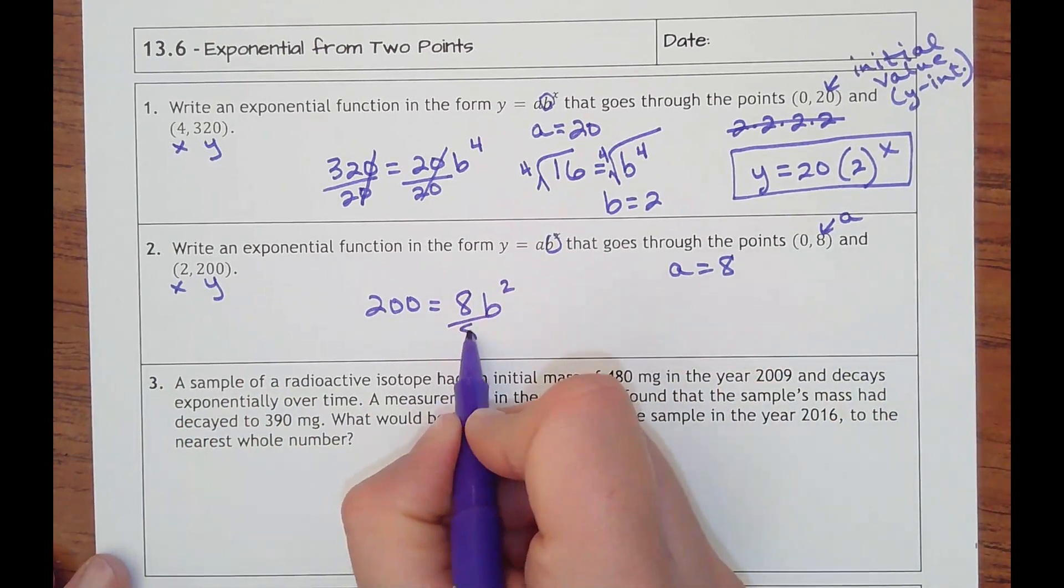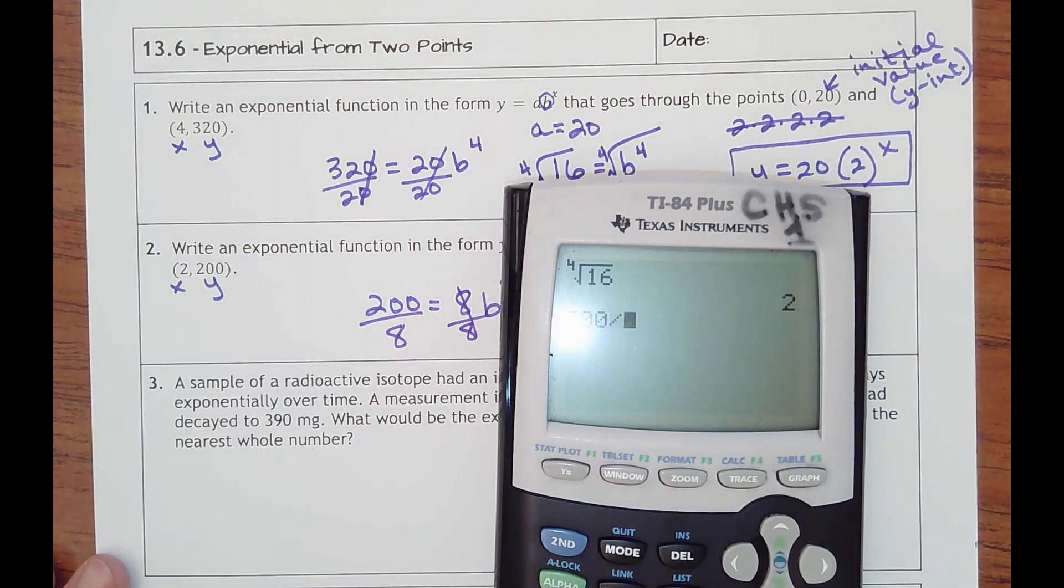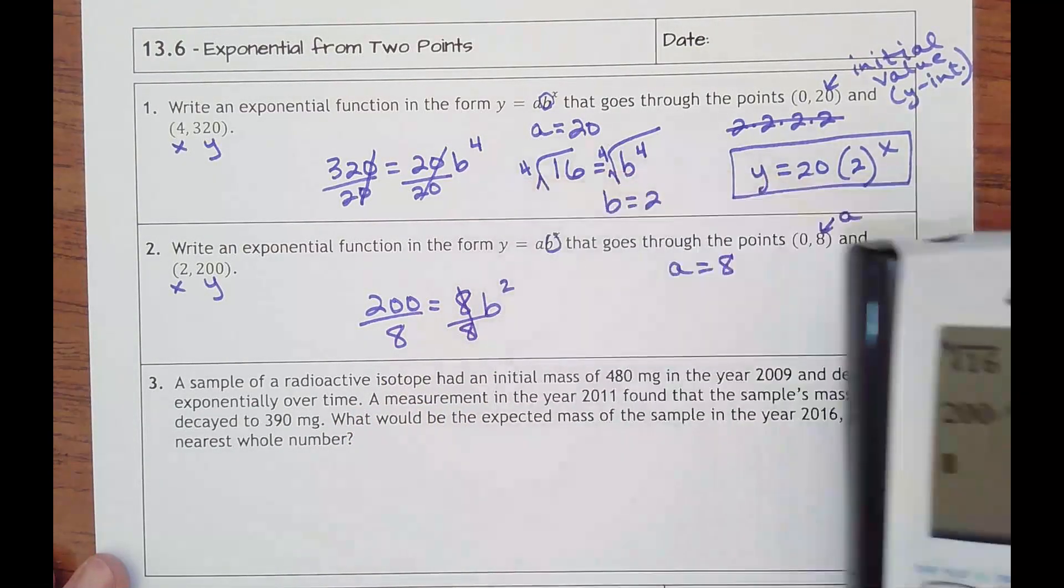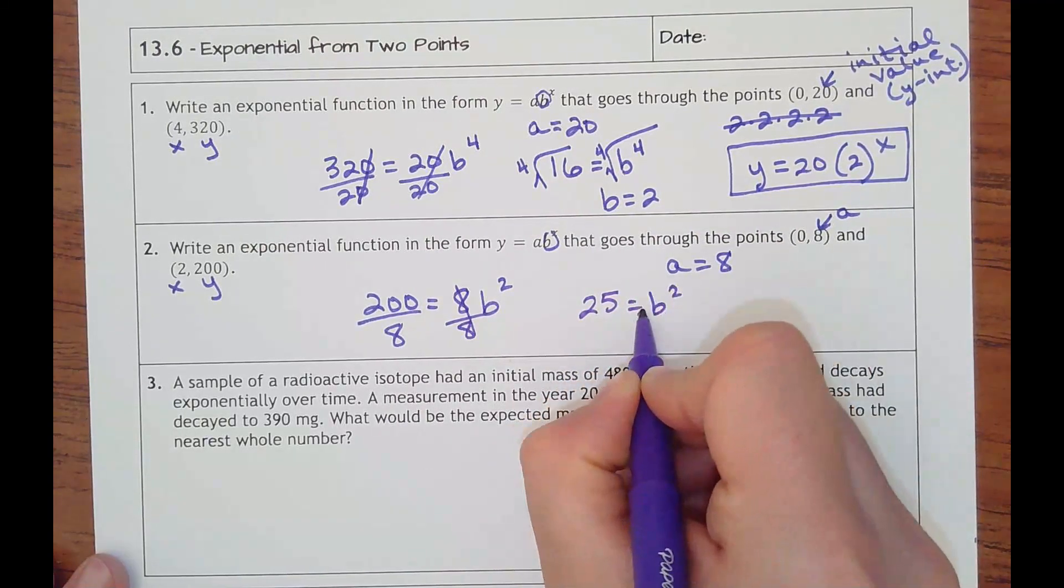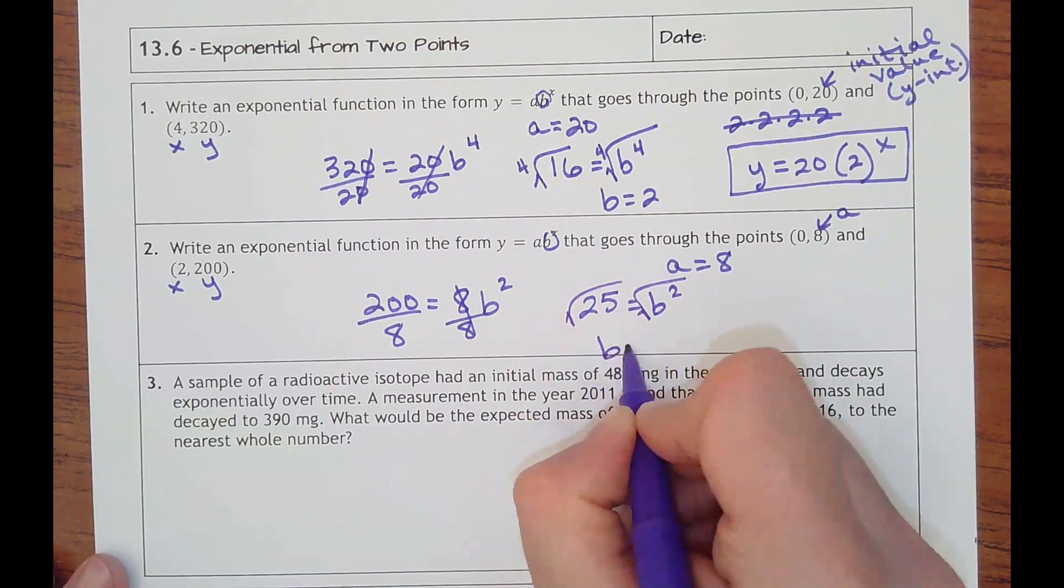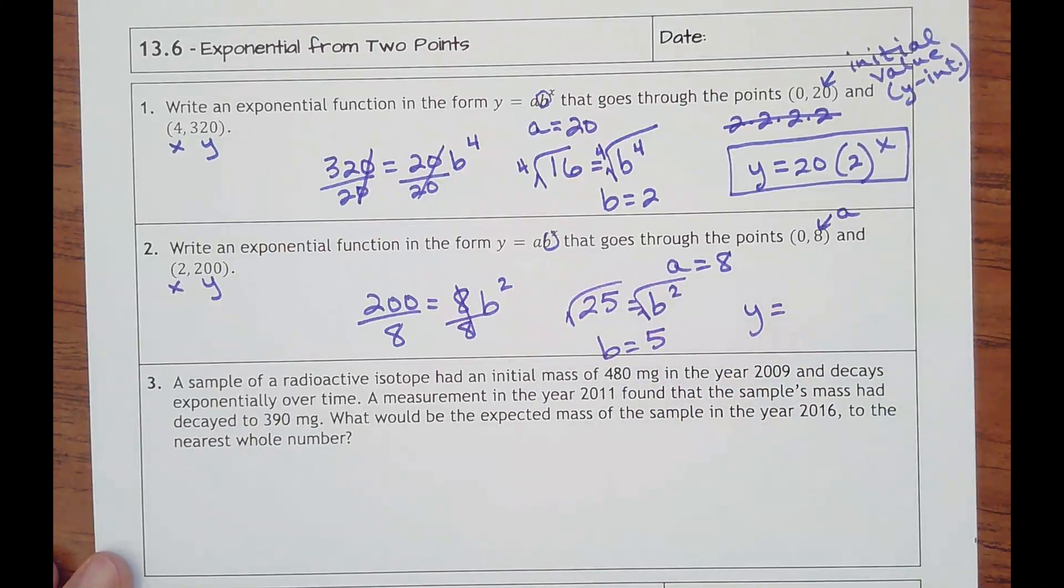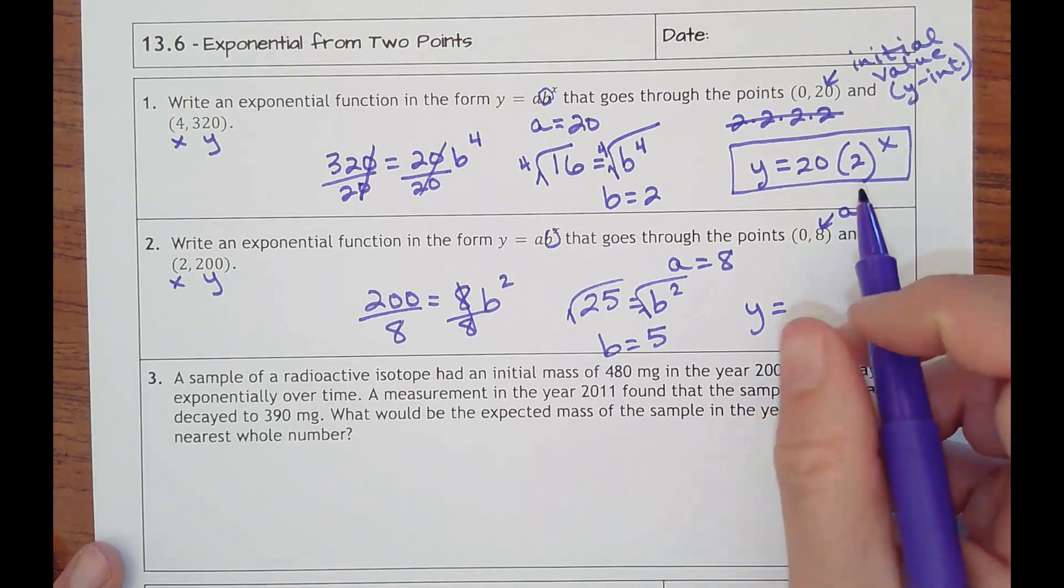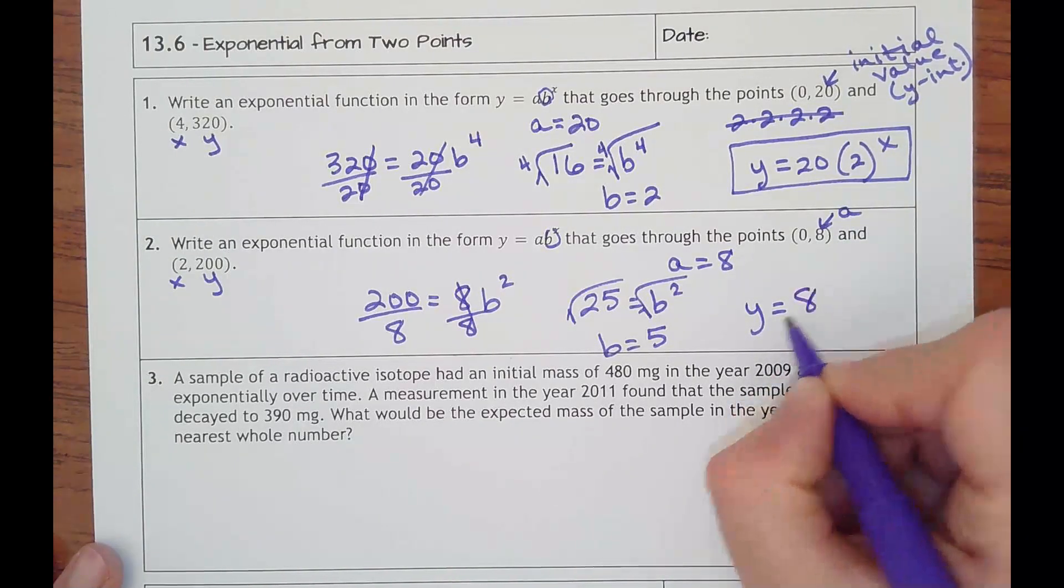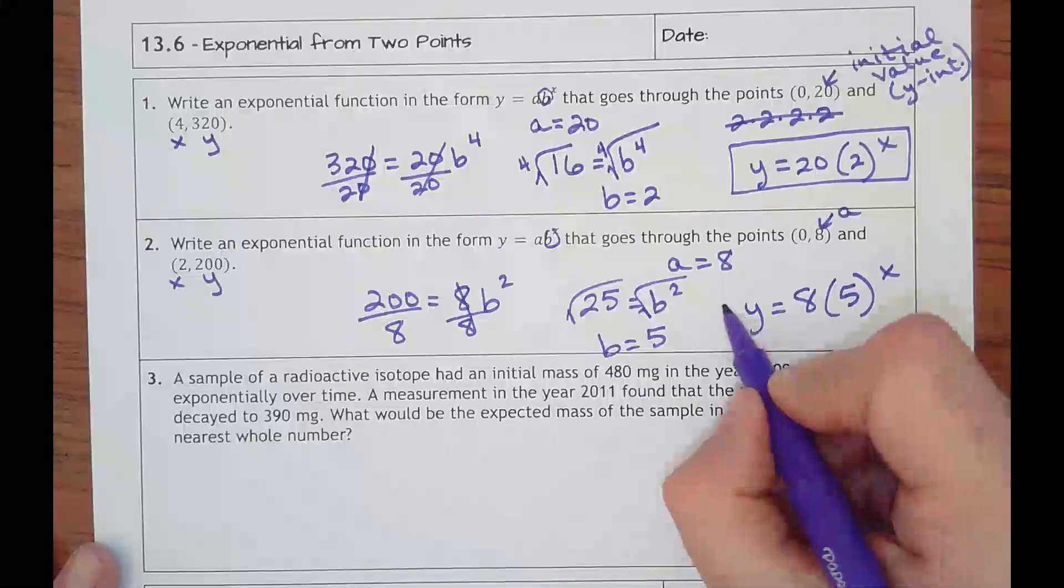To solve for b, I'd have to divide away the 8 first. 200 divided by 8 is 25 equals some number squared. To get rid of the square, I square root, which gets me 5. We're not going to make it positive negative - negative doesn't make sense in this case. So it's y equals my starting value of 8 times 5 to the x.